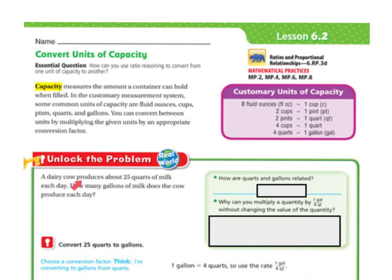Let's unlock the problem. A dairy cow produces about 25 quarts of milk each day. How many gallons of milk does the cow produce each day? Well, how are quarts and gallons related? We're going to look up here. 1 gallon is 4 quarts. Why can you multiply a quantity by 1 gallon over 4 quarts? We're going back to our ratios.